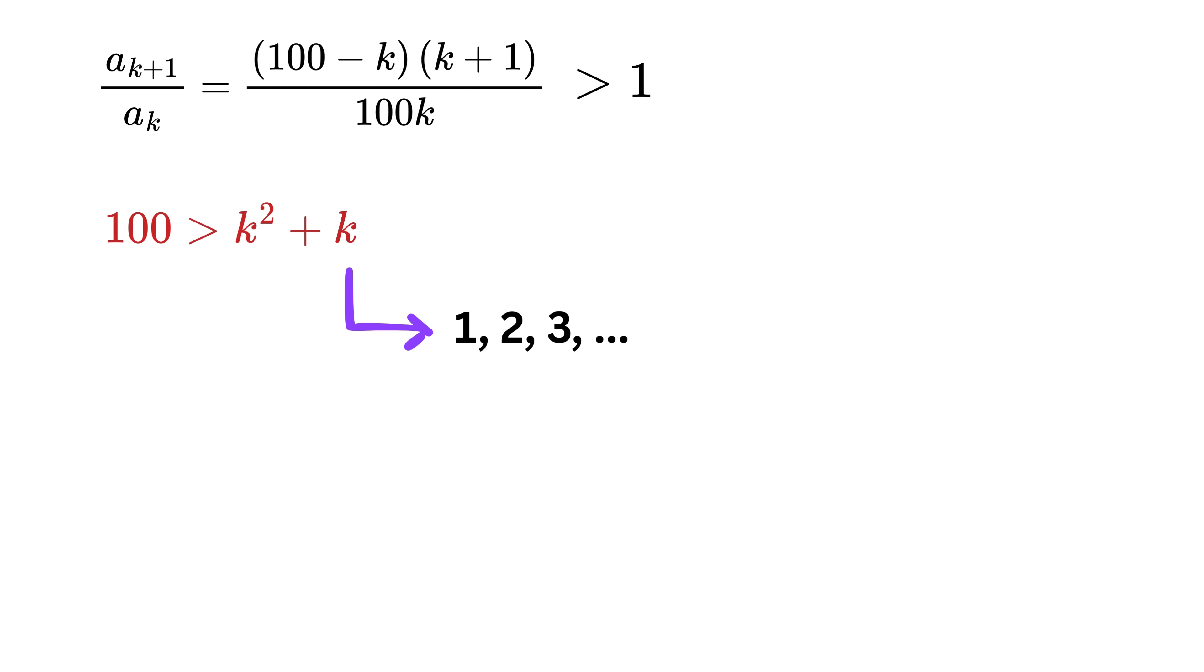k, or the person numbers, are whole numbers starting from 1, 2, 3, and so on. If we try values, we find that this inequality holds for k from 1 up to 9. But when k reaches 10, this becomes more than 100, and the inequality fails after that. So for k equals 9, we get a of 11 less than a of 10. This means the amount of slice increases up to person 10, but after that it starts decreasing.